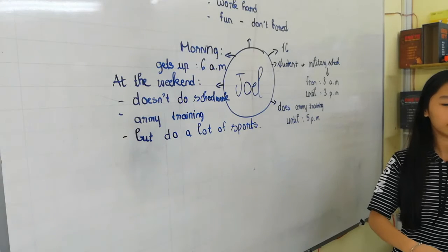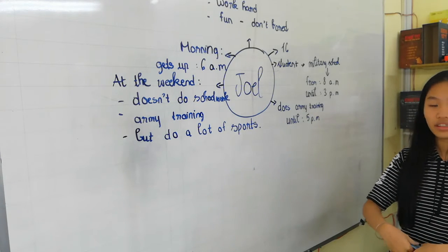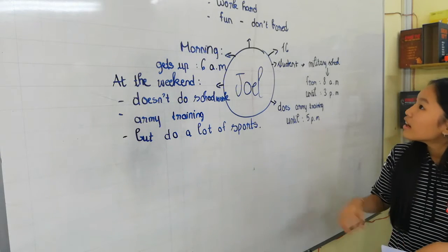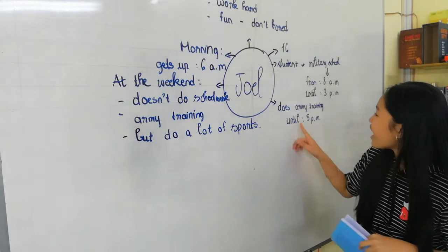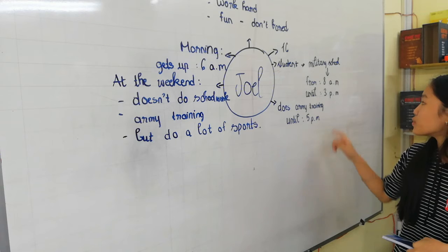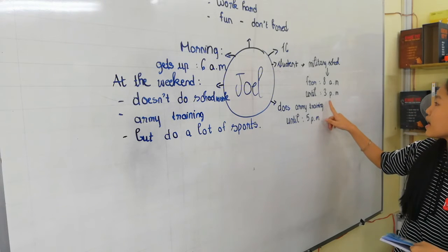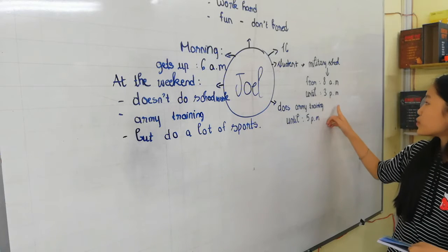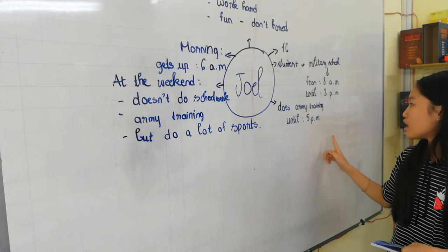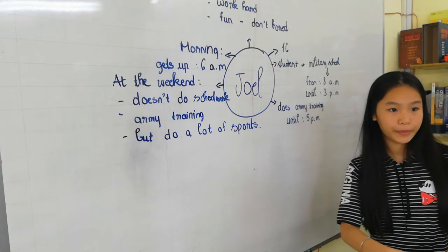Okay. And can you tell me the time that the army training classes start? I think that the army training starts at 3 p.m. because the school has to end at 3 p.m. and he goes to army training study until 5 p.m. Very good.